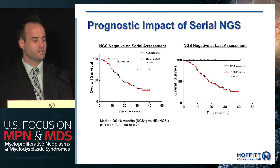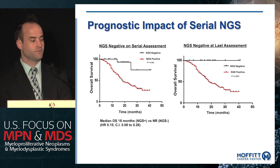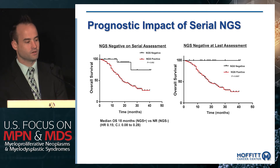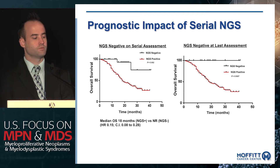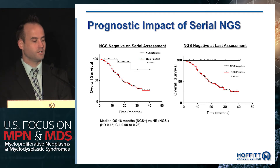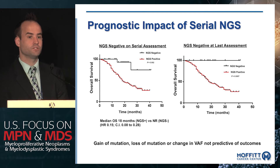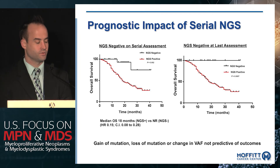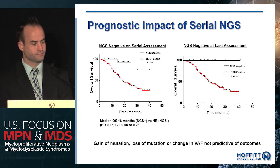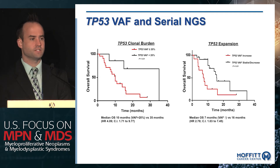All patients who were NGS-negative at last assessment were still alive. In multivariable models accounting for treatment type — HMA versus chemotherapy versus transplant — NGS negativity was independent of clinical prognostic scoring systems, suggesting it can serve as an early biomarker of response to therapy. In contrast, gaining a mutation, losing a single mutation, or changes in VAF alone were not prognostically relevant.